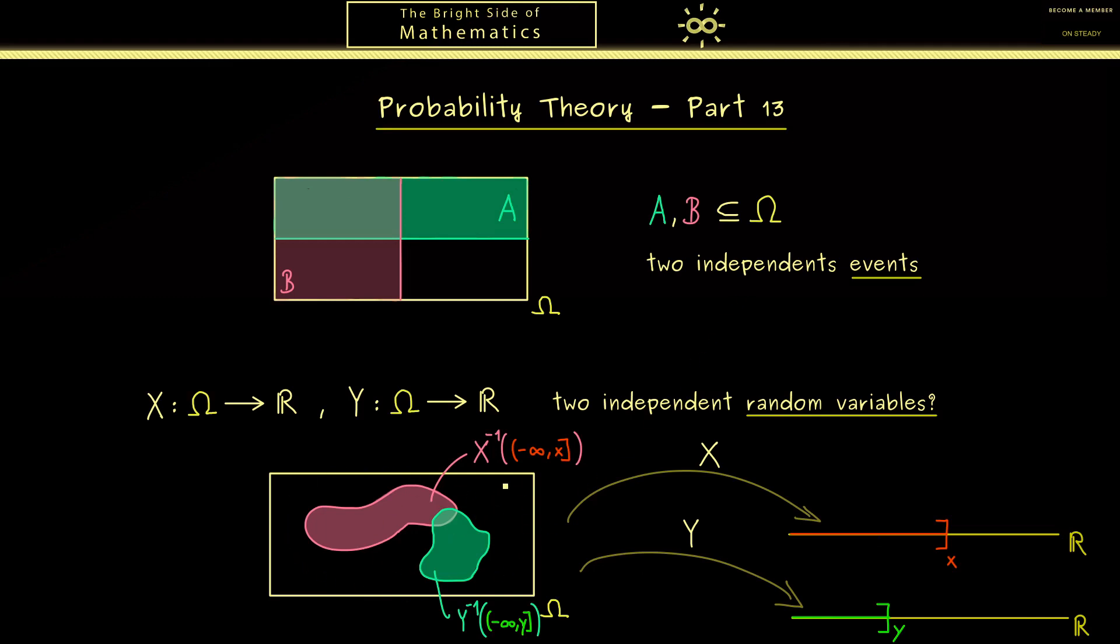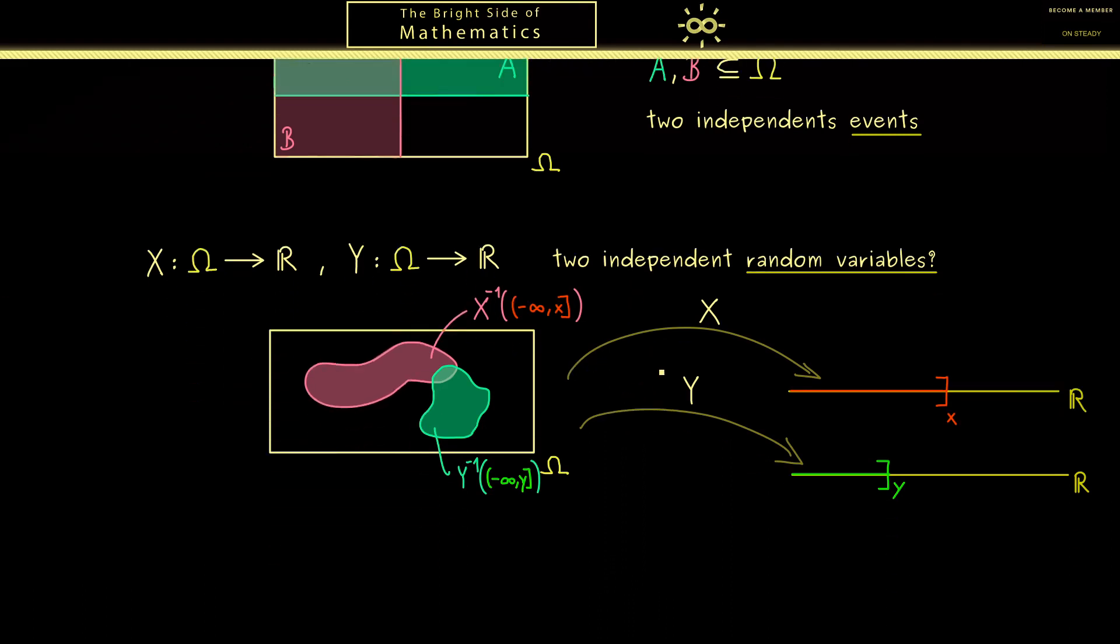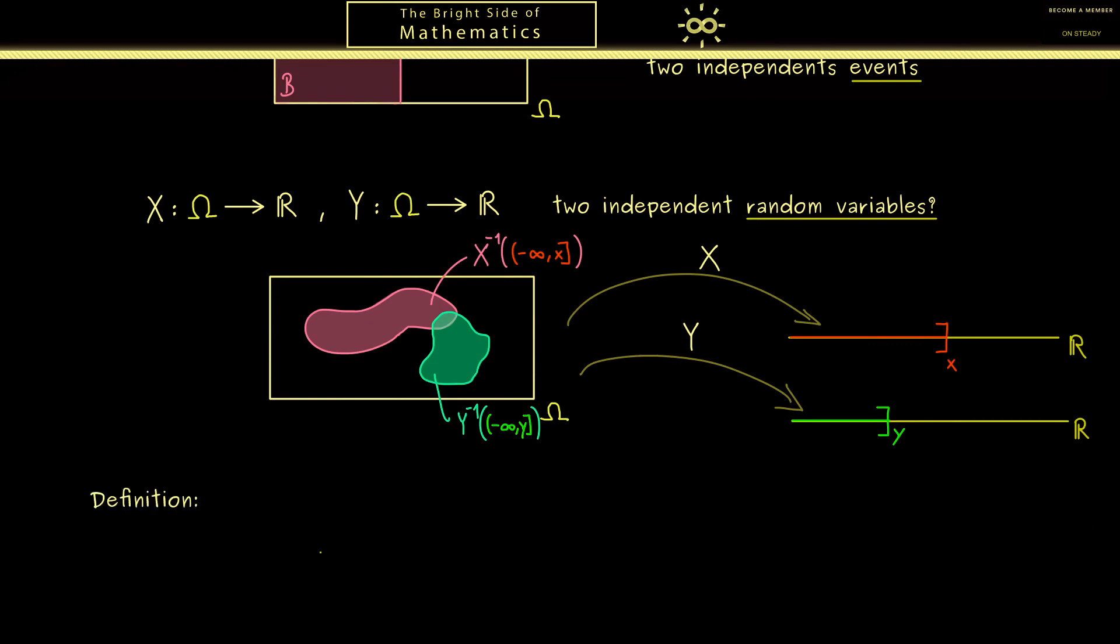So in summary, by looking at the pre-images of all these intervals we find a whole collection of events here. And in the case that each pair of events, one from the sigma algebra generated by X and the other one from the sigma algebra generated by Y, is independent by the definition above, then we call the two random variables X and Y independent. First this seems like a strong property but we will see this is exactly what we need. However, before we talk about this, let's first fix this with a definition.